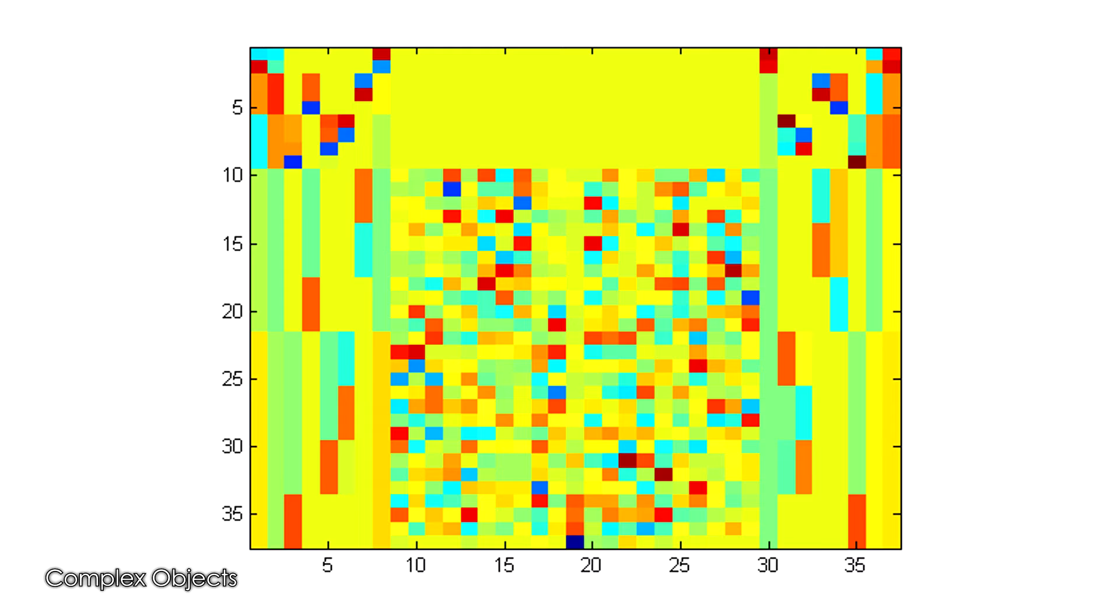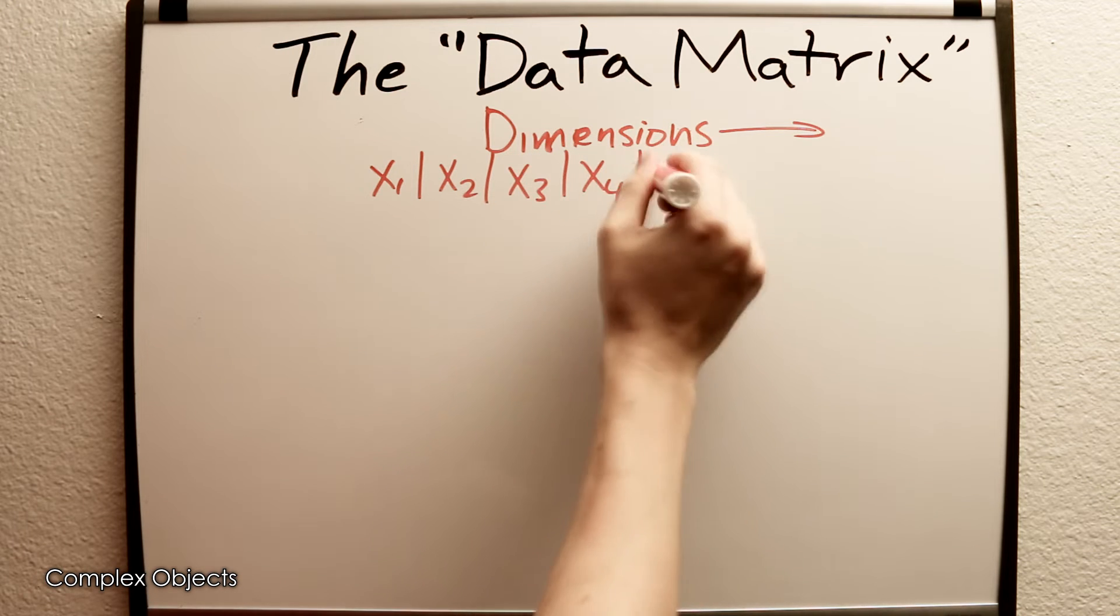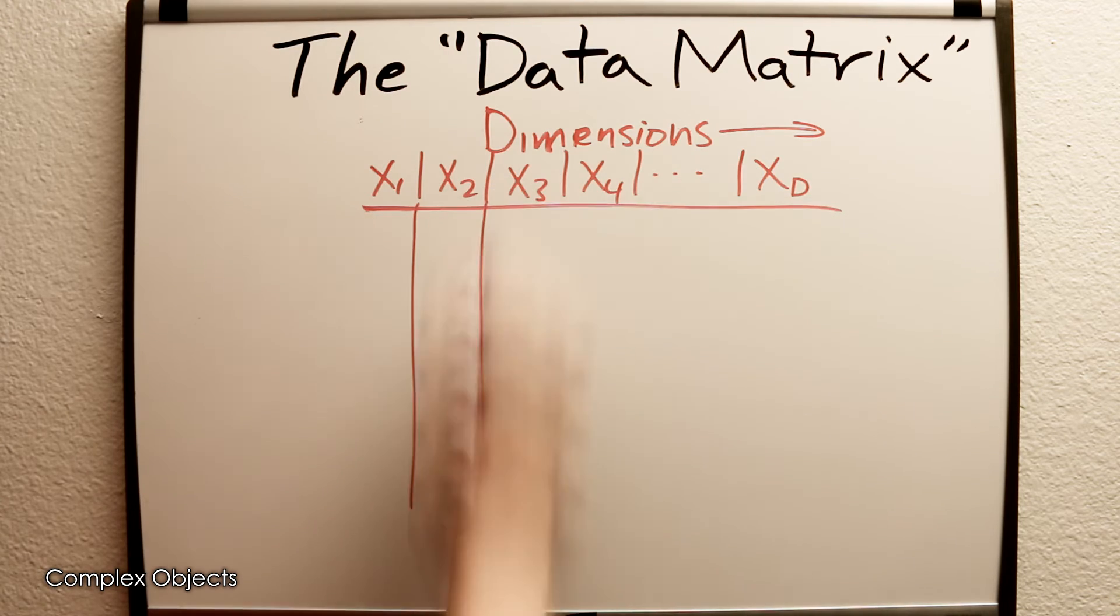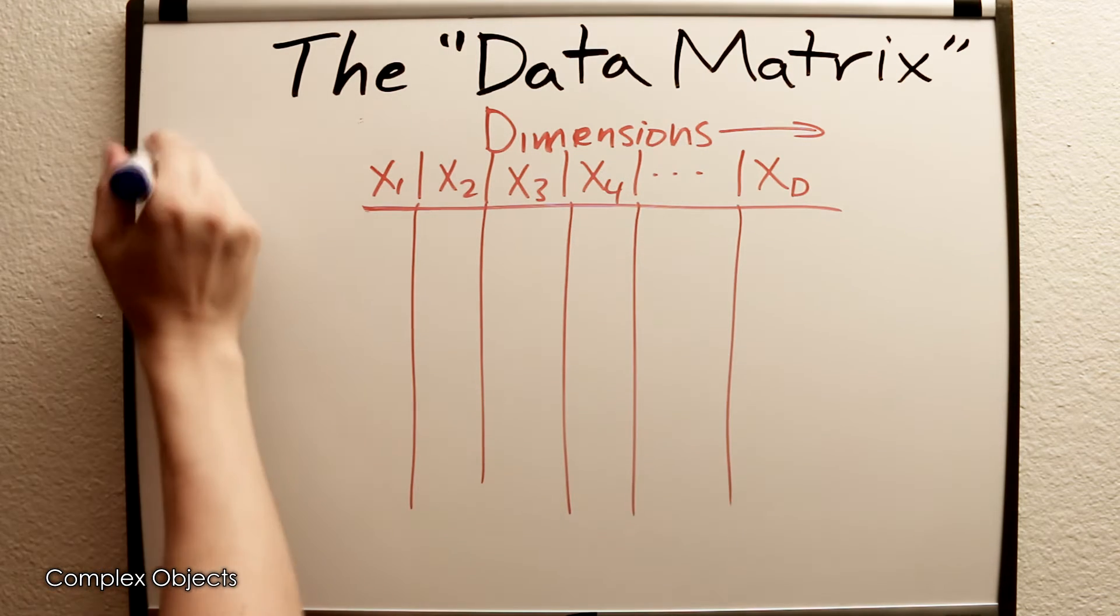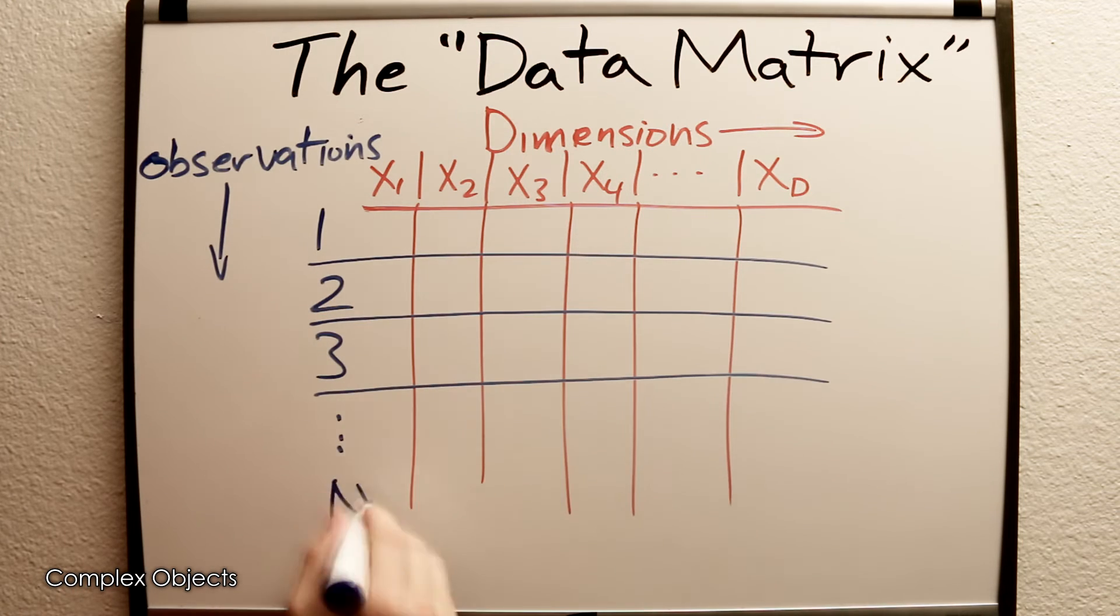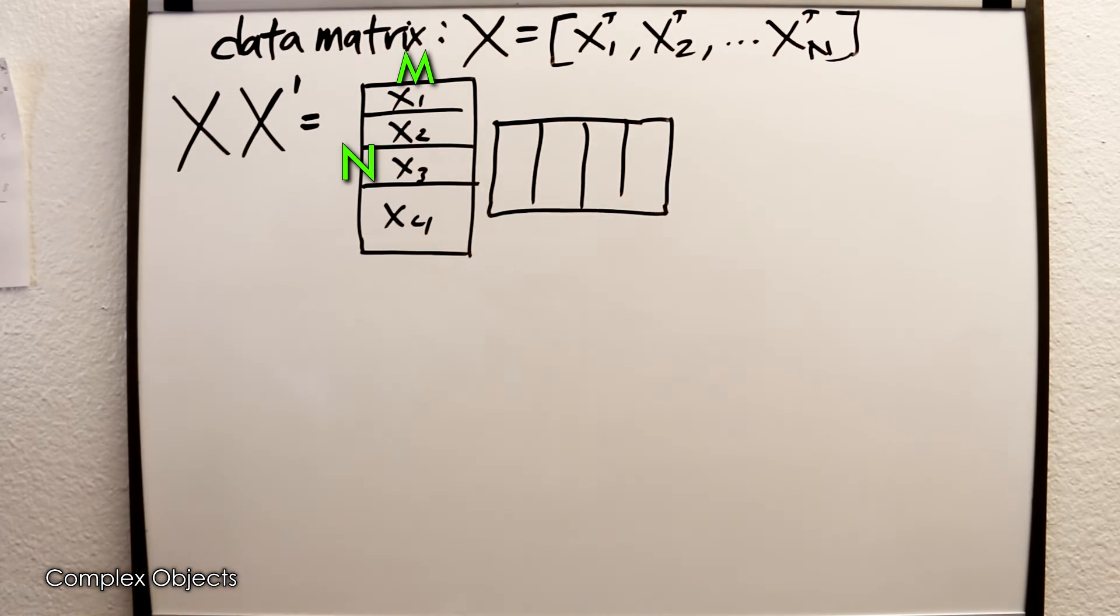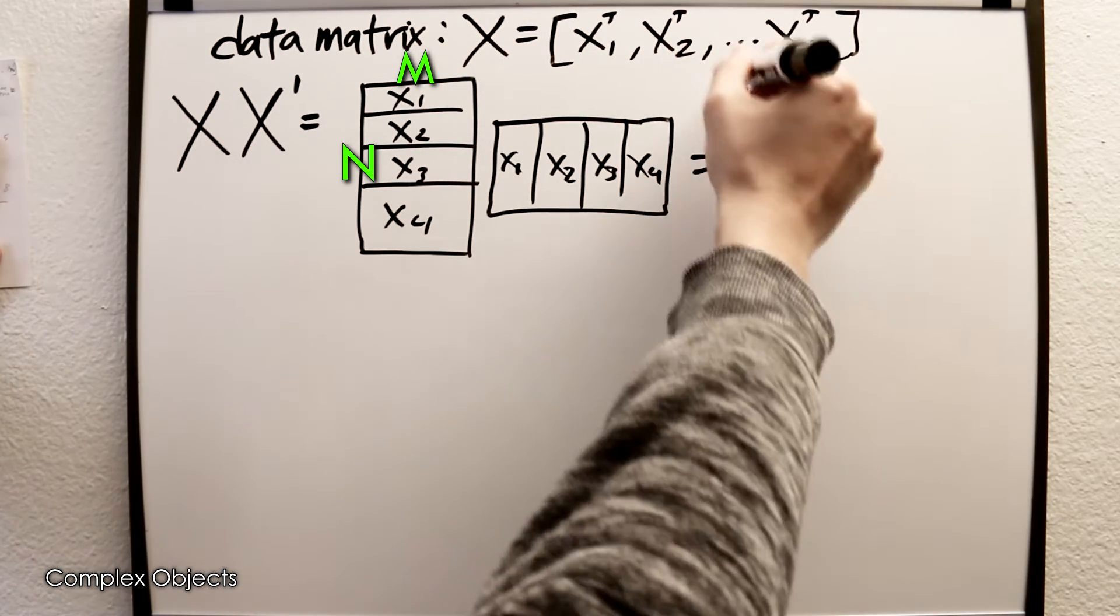The data points are typically organized into what you could call a data matrix, which is n rows in m dimensions. Each row represents one data point in the original high dimensional space. If you multiply this data matrix times the transpose of itself, you get what's called the gram matrix.